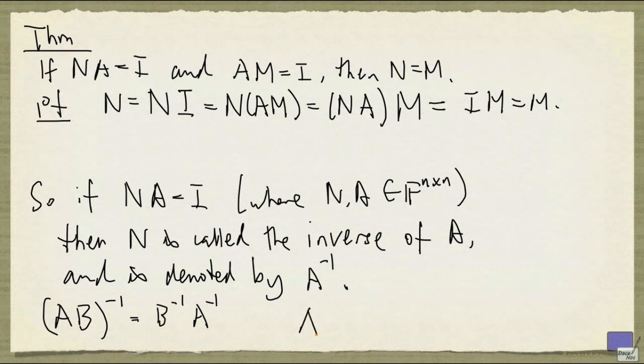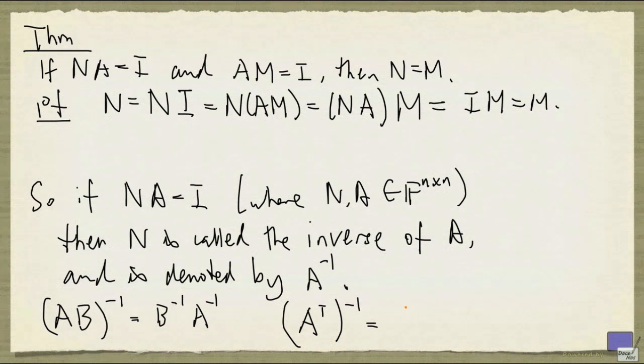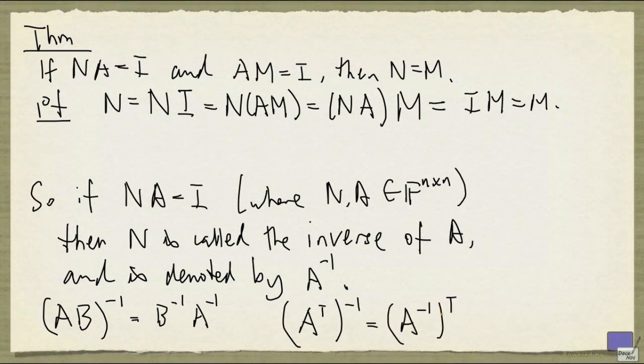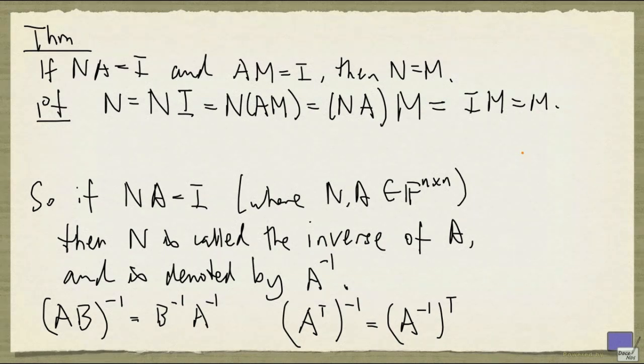Another property is that if you have the transpose of a matrix, and you look at its inverse, it's the same as the inverse transposed. Now, what is the transpose of a matrix? Well, basically, a transpose of a matrix is the ith row becomes the ith column.